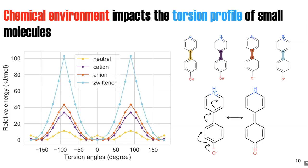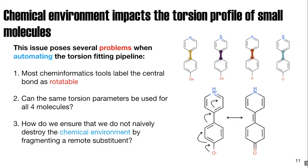How is this a problem when we are trying to automate fragmentation and parameterization of torsion parameters? First, most cheminformatics toolkits will label the central bond as a rotatable bond. Second, can we use the same torsion parameters for these four torsions? They're the same torsion type, but they very obviously have very different torsion scans. Most relevant for this discussion is how do we ensure we do not naively destroy the chemical environment by fragmenting a remote substituent that has a strong effect on the bond of interest.